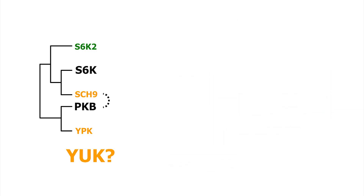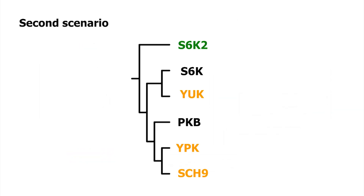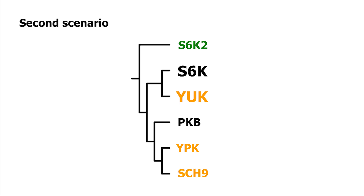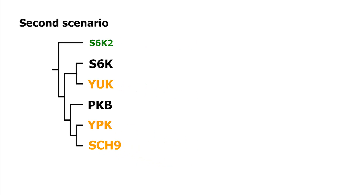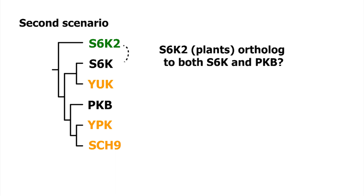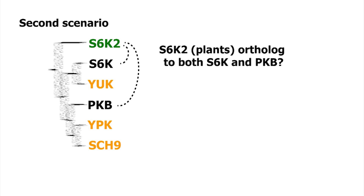That's surprising. This newly found YAK sequence clusters with S6K. And yeast SCH9 clusters together with YPK and PKB. From this tree, it appears that plant S6K2 is the ortholog to both S6K and PKB.